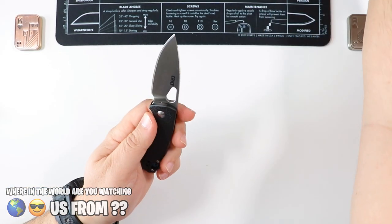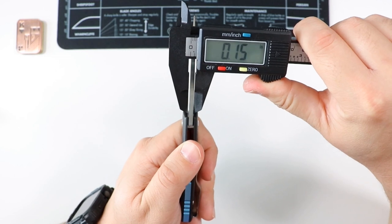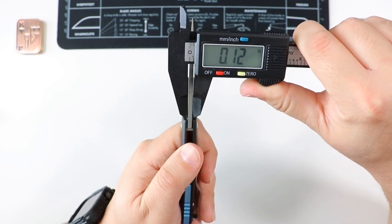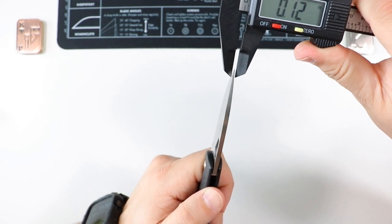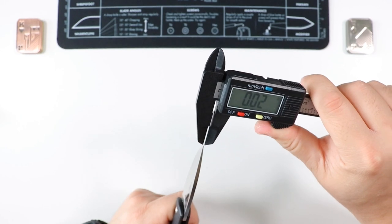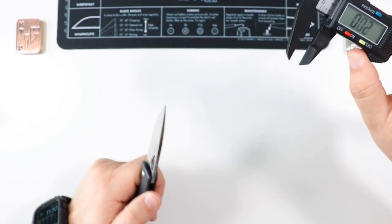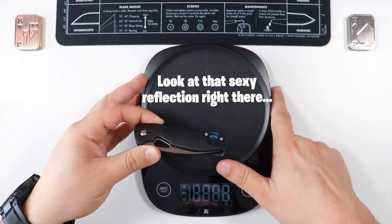Let's get a quick blade stock thickness on this guy. All right, this guy is going to be, on the thickest point, it's going to be 0.12 inches. And on the slimmer end, on the very, very tip, it's going to be 0.02. Try it again. 0.02 right there on the very, very tip.